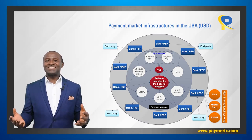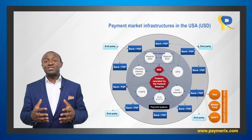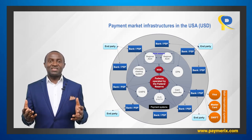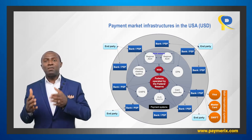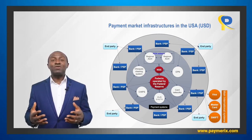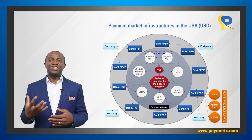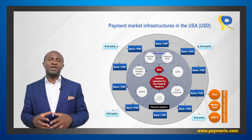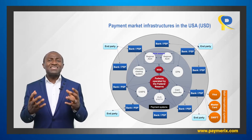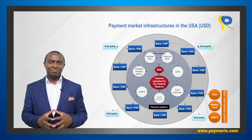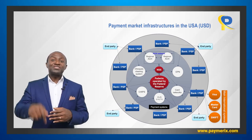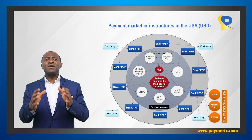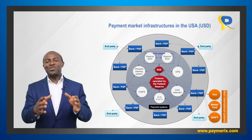Finally, we see CLS. The CLS system is used to process dollar legs of foreign exchange transactions. The Continuous Link Settlement system is used for the settlement of foreign exchange transactions in central bank money. CLS was created to eliminate the risk associated with foreign exchange settlement across time zones. Cross-border payments go through SWIFT or the card networks. With such a model, isn't it simple to understand and study payment systems in any country?